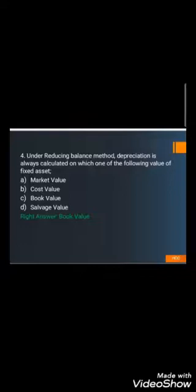Question number four: Under the reducing balance method, depreciation is always calculated on which value? A) Market value, B) Cost value, C) Book value, and D) Salvage value. The correct answer is C) Book value. We do not calculate depreciation on market value. Under the straight line and other methods, depreciation is calculated on cost. There is no formula applying depreciation to salvage value. The reducing balance method formula is: (Cost minus accumulated depreciation) multiplied by the given rate.